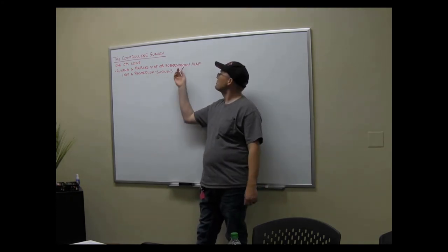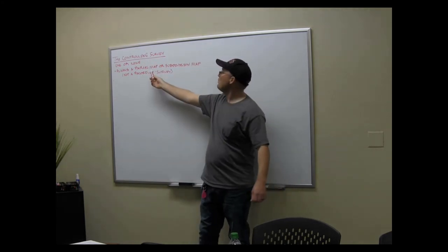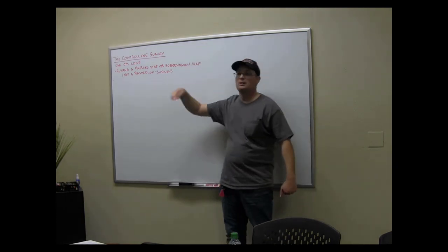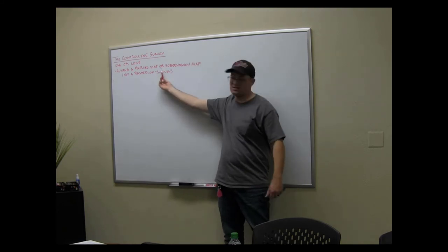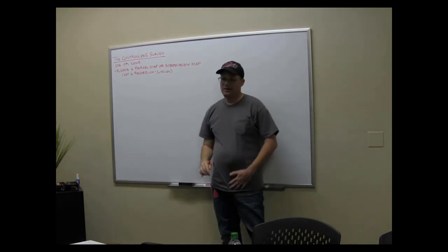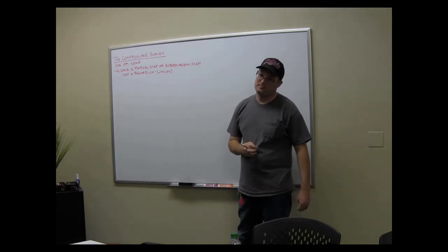So, if you don't have a parcel map or a subdivision map, you don't have a controlling survey. Nope. And you're going to know because your land description is going to be lot and block. If it's lot and block, lot two of block five or parcel A as shown on that map, that's going to be your controlling survey. That make sense? If it's not that, then the parcel is created by deed.